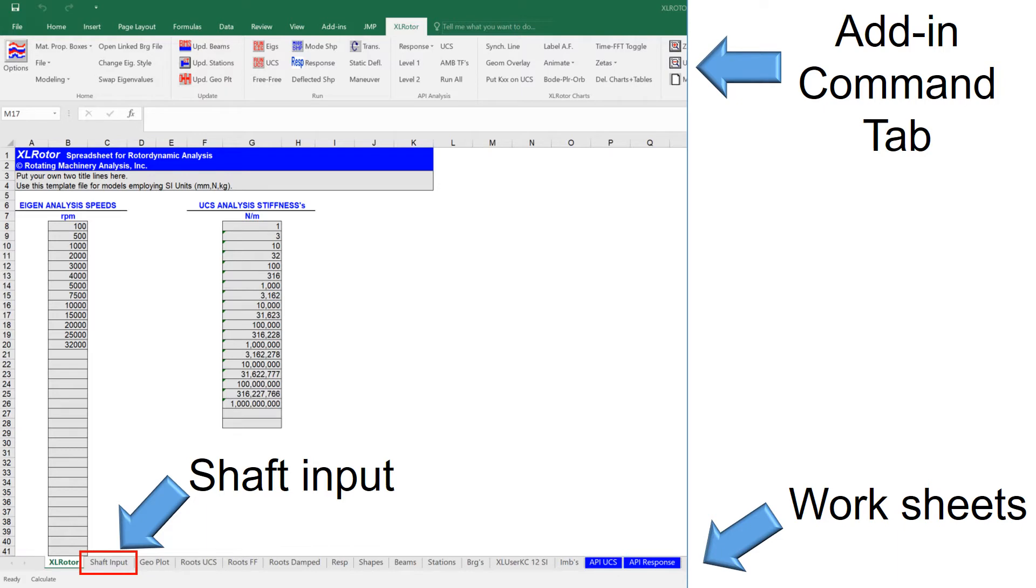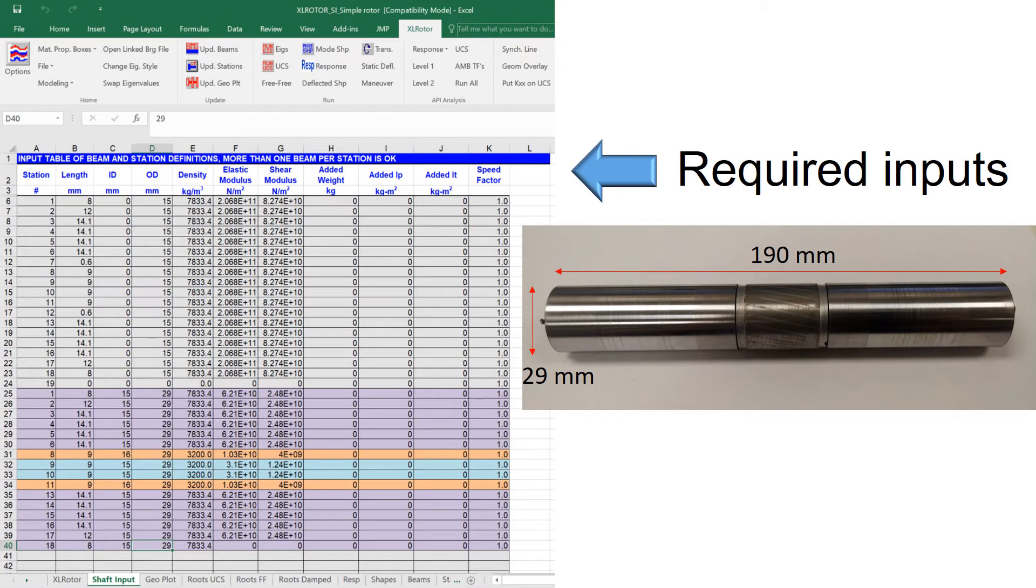Let's jump right into the worksheet called shaft input. The required inputs are shown on the top of the sheet and the inputs are mainly rotor outer diameter, inner diameter, length, and material properties.